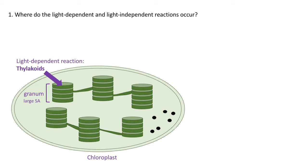It's important to recognise that the thylakoids provide a large surface area for photosystems to be embedded in the membrane, for ATP synthase to be embedded there, and for the electron transport chain. The light-independent reaction occurs in the stroma.